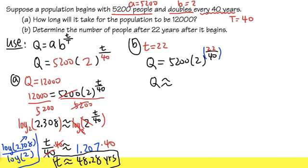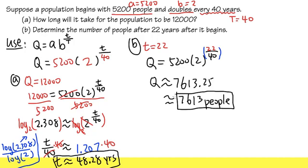We end up with, you will end up with 7,613.25 and so on. But we are talking about people. So I will just say this is approximately 7,613 people. Because you cannot have 0.25 people. So yeah, 7613 people. This right here is it.